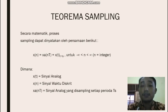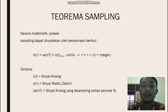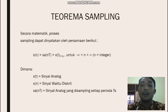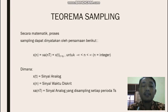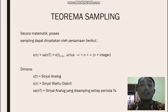Teorema sampling bisa dijabarkan secara matematik sebagai berikut: X(N) sama dengan X_a(nT) sama dengan X(t), untuk negatif tak terhingga lebih dari N kurang dari tak terhingga, N sama dengan integer. Dimana X(t) itu sinyal analog, X(N) sinyal waktu diskret, X_a(nT) adalah sinyal analog yang disampling setiap periode T_s.